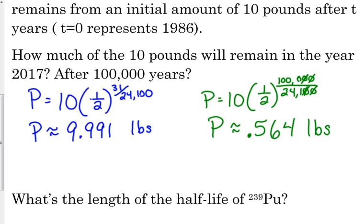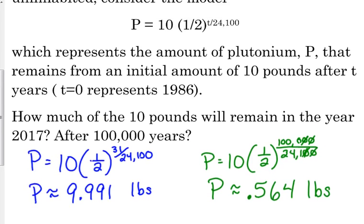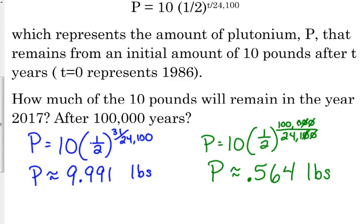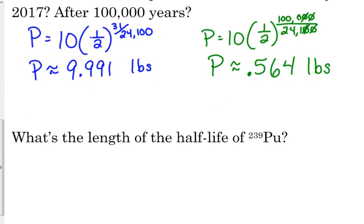Now, I've got another question on there. This is radioactive decay. Radioactive decay a lot of times is also referred to as half-life. So, I asked, what's the length of the half-life of 239 plutonium? Now, you may know, you may have seen these formulas before. So, you know which part of the formula is the half-life. But, if we didn't know what part of the formula was, how might we figure that out? How can we figure out what is the half-life of the plutonium? What does half-life mean?